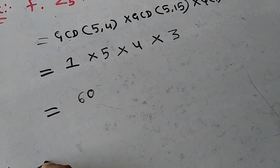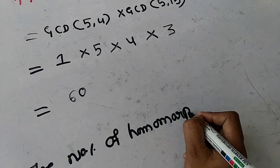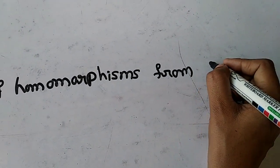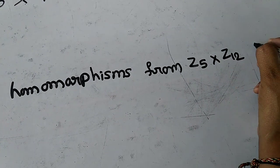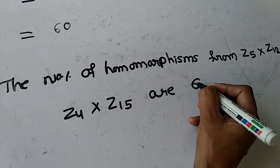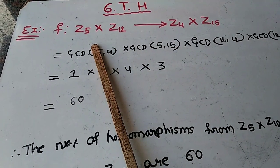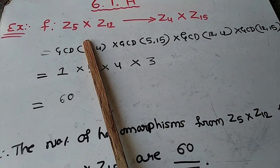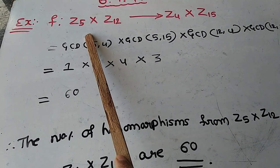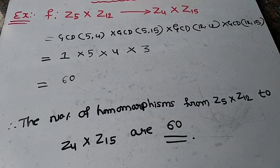Therefore, the number of homomorphisms from Z5 cross Z12 to Z4 cross Z15 is 60. Remember: if you recall the formula and practice, it becomes easy. We have now seen four types, and two more types remain.